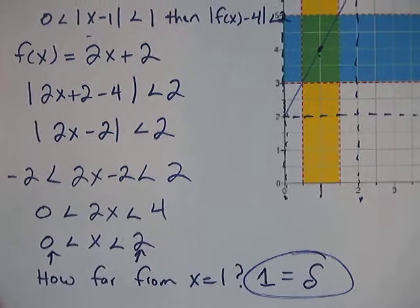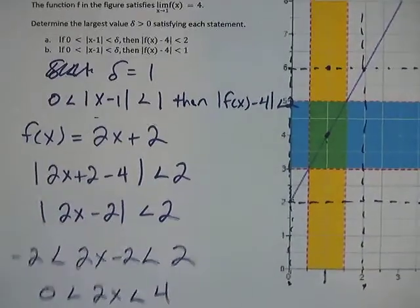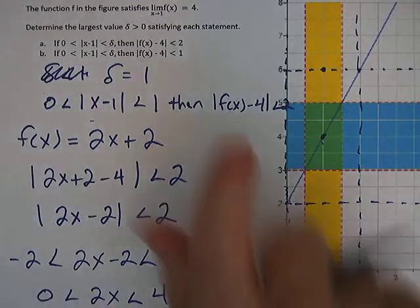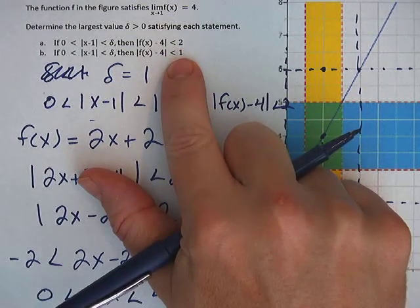Now for letter B, let me get a separate sheet of paper here. For letter B, the only difference here is that we've got a 1 right here instead of a 2.